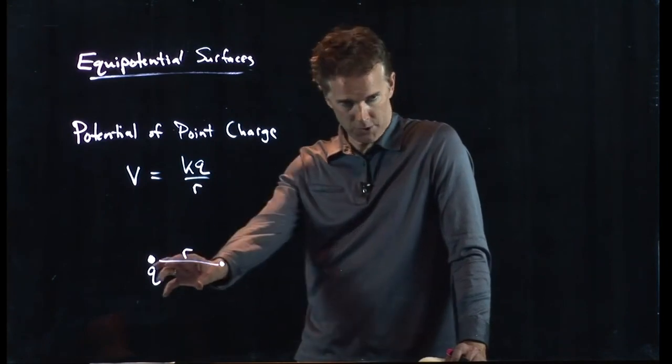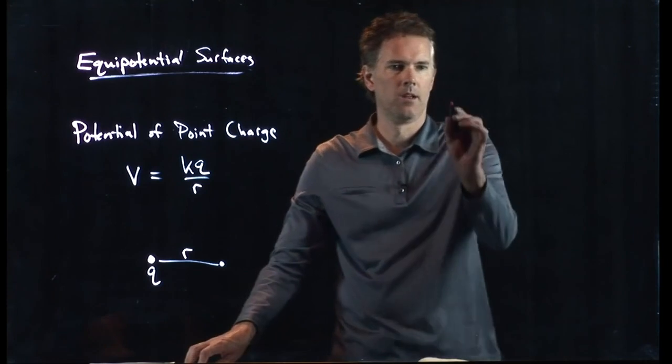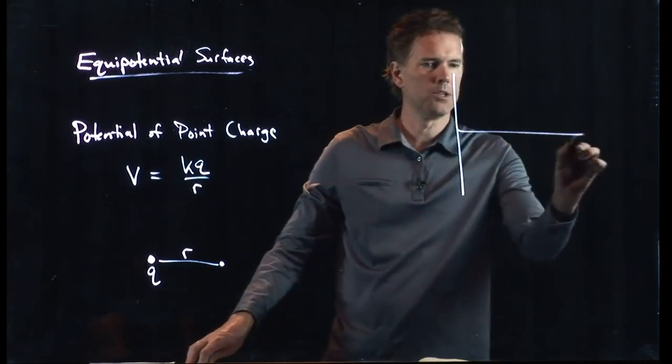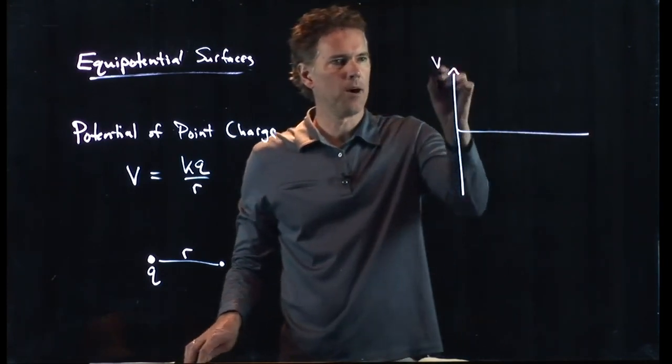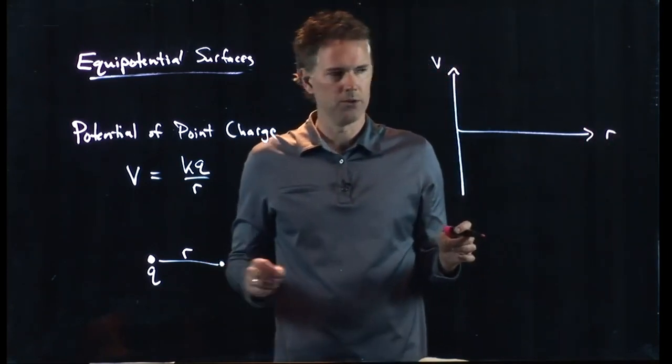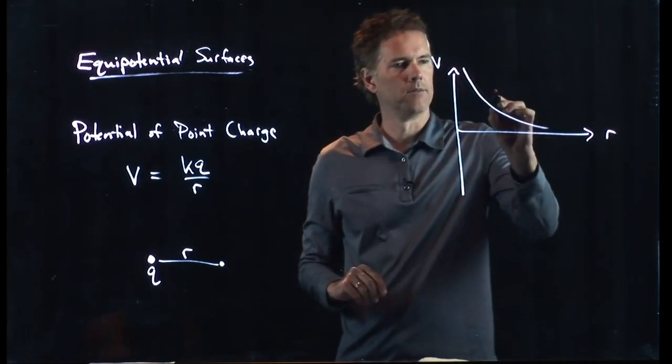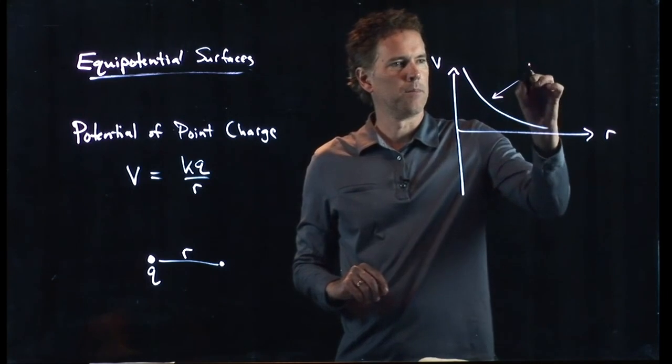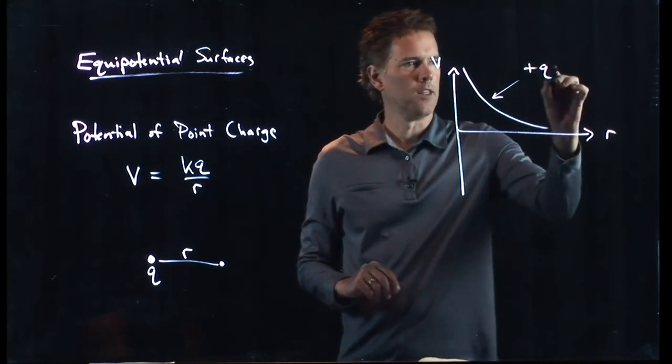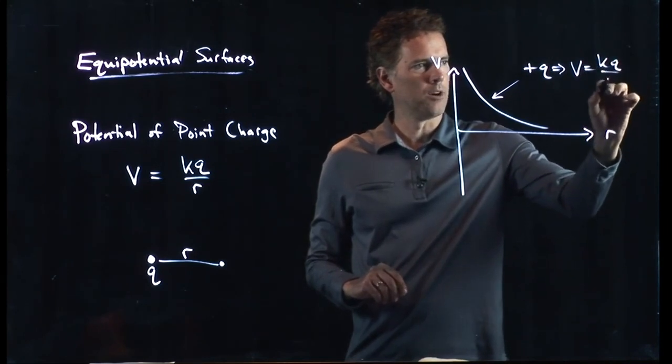So, if it's a positive charge, then we have a positive potential, and that potential is going to drop off as a function of R, how far away from the charge you are. So, it'll look like that. Positive charge, and therefore, V equals KQ over R.